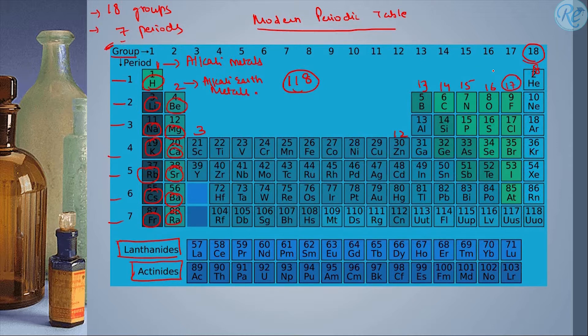Similarly, we have a name for the seventeenth group as well. We call it the halogen group. Also, the eighteenth group is called the zero group, and the reason you will find soon. Now that you know about valency, you will be able to get this very quickly.